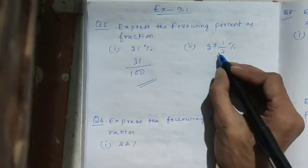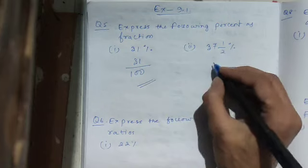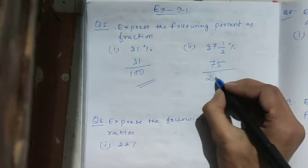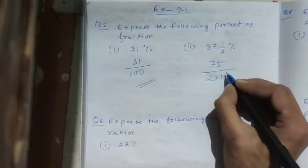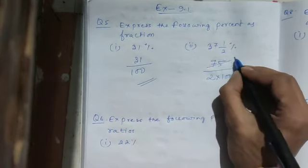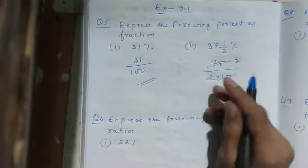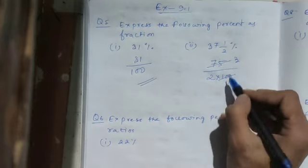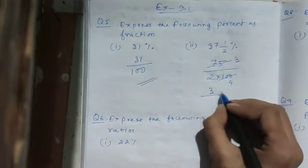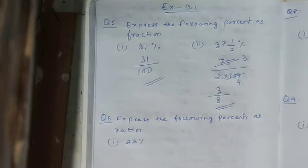For the next one, 2 into 37 is 74, plus 1 is 75, so it becomes 75 by 2. Since percent is there, denominator 100 will be there. Now we cut 25: 25 goes into 75 three times, and 25 goes into 100 four times. No more cancellation possible — numerator is 3 and denominator is 8. So 3 by 8 is the answer.